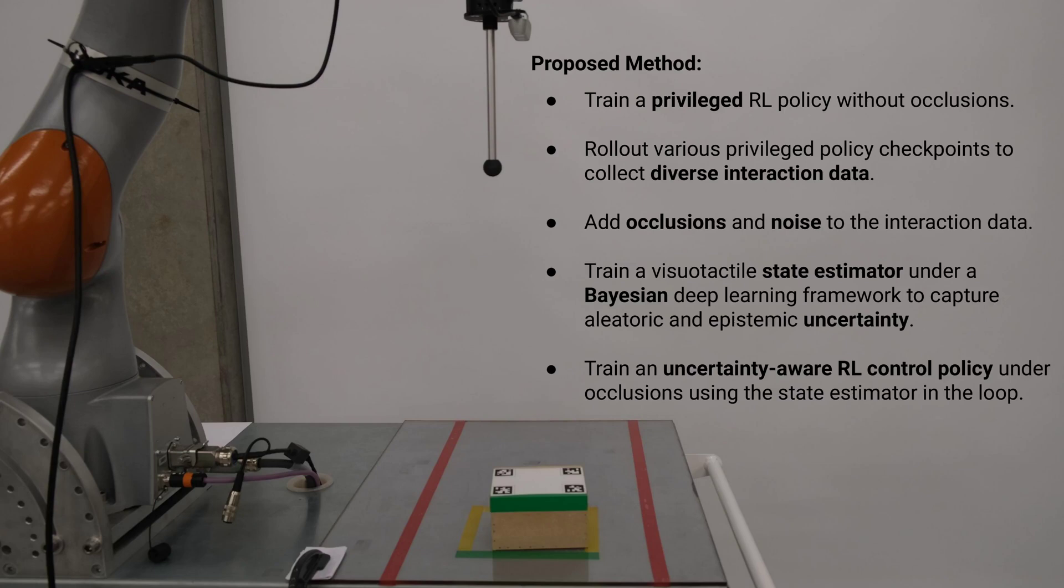Finally, we train an uncertainty-aware RL control policy in a simulated environment with occlusions using the pre-trained state estimator in the loop.